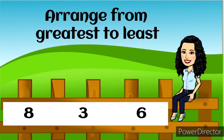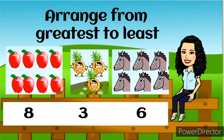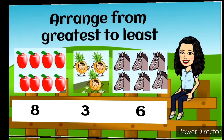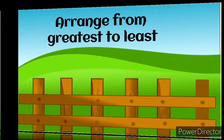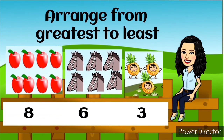Now arrange from greatest to least, which means from big to small number. The first set has eight apples, the second set has three pineapples, and the third has six horses. Go, arrange it. Wonderful! The correct answer is eight, six, and three.